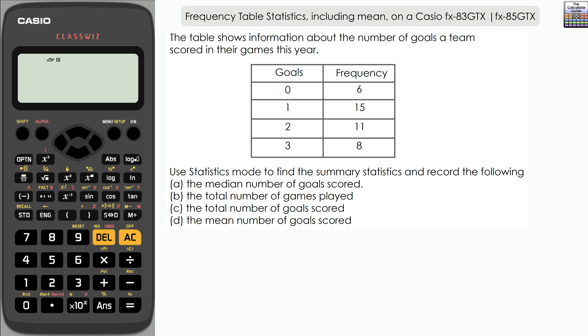Let's input the frequency table into the calculator. Press menu and then select two for statistics - it may be a different number on your model of calculator. Because we only have one variable, the number of goals scored, we want to select one for one variable.